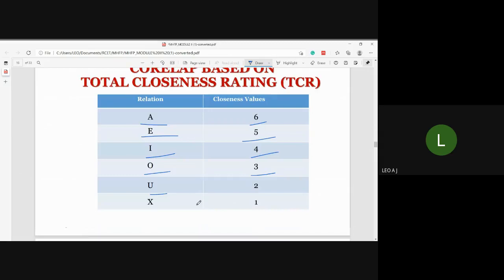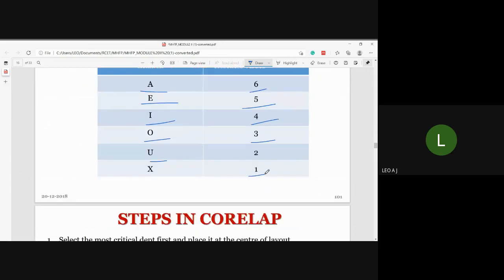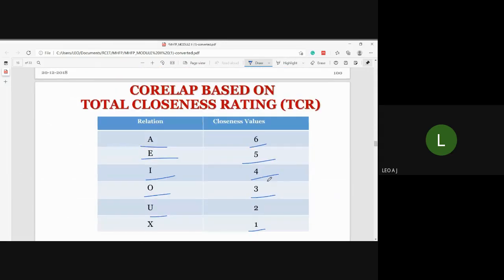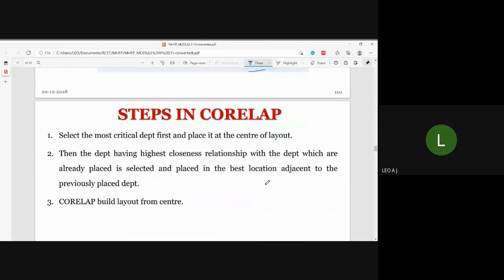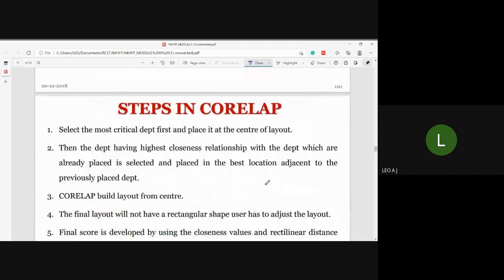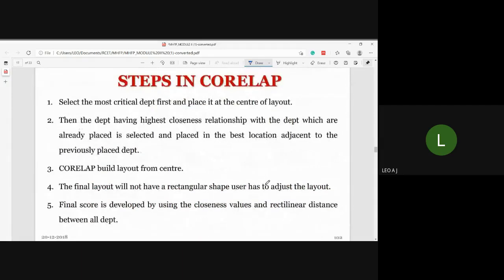U is unimportant, X represents undesirable - departments that should be kept apart. These closeness ratings are used to determine placement order and final layout scoring.